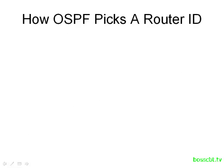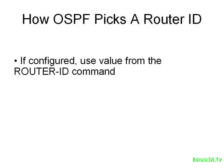When a router starts its OSPF process, it has to have a router ID, so it follows a three-step process to make sure it ends up with one no matter what. The first thing it checks is whether there's a configuration command actually telling it which ID to use — this is the router ID command. If this is configured, the OSPF process uses this ID and it's done.